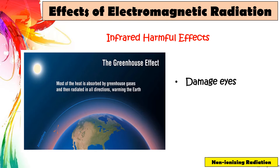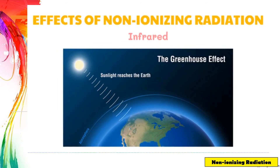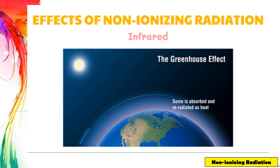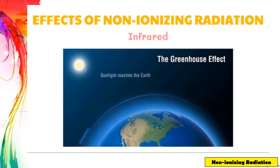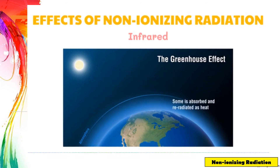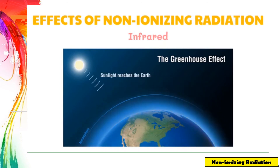Here are the harmful effects of infrared. First, it can damage your eyes. Second, climate change due to the greenhouse effect. Infrared radiation from the sun is normally absorbed by the Earth's surface and the clouds, then released as heat into the atmosphere. When the atmosphere has a lot of water vapor, along with nitrogen, sulfur, and fluorocarbons, the infrared radiation gets trapped and causes the atmospheric temperature to rise. This is called the greenhouse effect. Temperature increases cause changes in the weather patterns on Earth and lead to climate change.